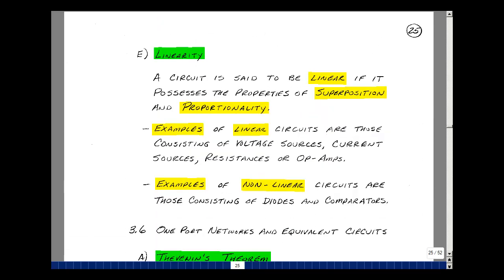I mentioned the word linearity before, but now let me give you a formal definition. A circuit is said to be linear if it possesses the properties of superposition and proportionality. Examples of linear circuits that we've looked at are those that contain voltage sources, current sources, resistances, or op-amps.